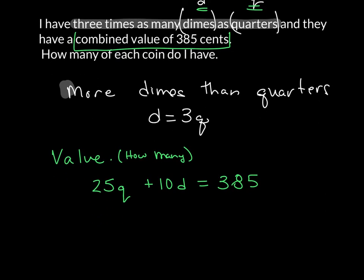So now I go through and use substitution. I take that fact that I know if I have a dime, it is equal to 3 quarters. So I plug that in. And now I have 25 quarters plus 10 times the 3 quarters is equal to 385.